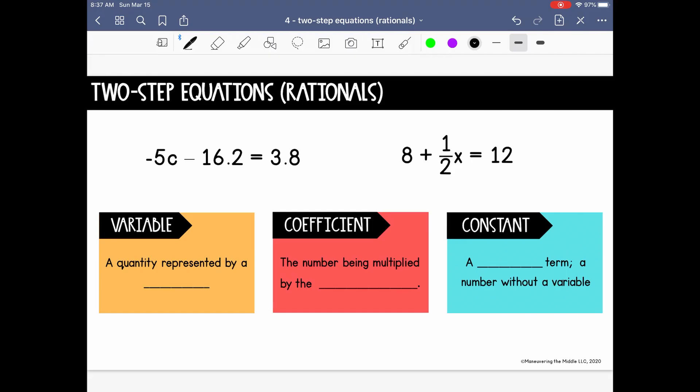First, a variable is a quantity represented by a letter. If you look at the two example equations, the variable in the first equation is C, and the variable in the second equation is X. The coefficient is the number being multiplied by the variable. In the first equation, the coefficient is negative 5. In the second equation, the coefficient is 1 half.